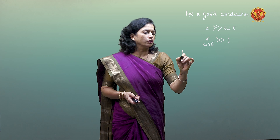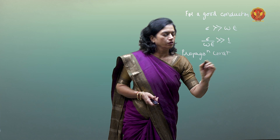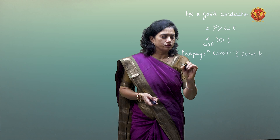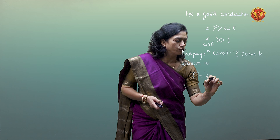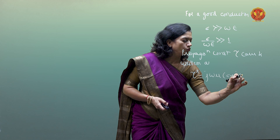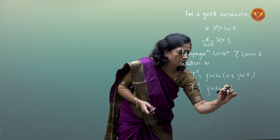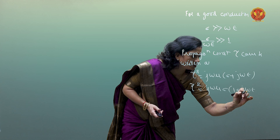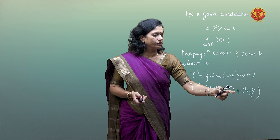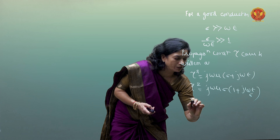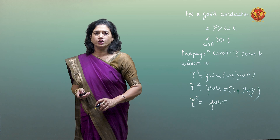The propagation constant gamma can be written as: gamma squared equals j omega mu times (sigma plus j omega epsilon). Taking j omega mu sigma as common: gamma squared equals j omega mu sigma times (1 plus j omega epsilon upon sigma). Since j omega epsilon upon sigma is very small compared to 1, we neglect it. Ultimately, gamma squared equals j omega mu sigma.